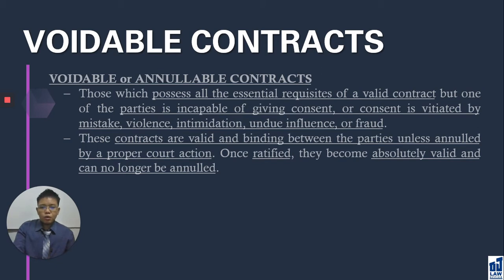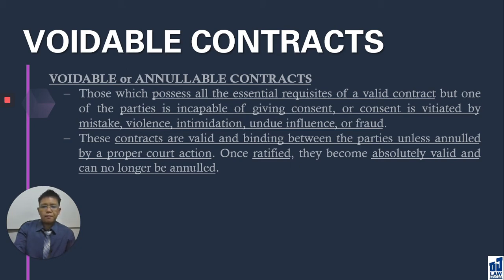You can also ratify a voidable contract. When you ratify, you adopt the defective contract, meaning you no longer question its defect. Once an avoidable contract is ratified, it will become absolutely valid and you can no longer ask for annulment.